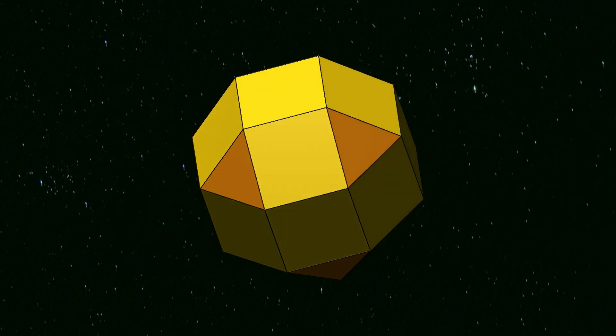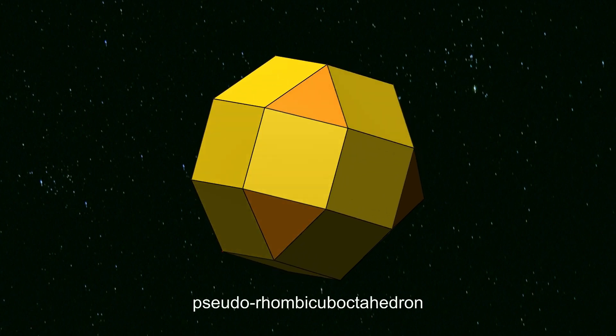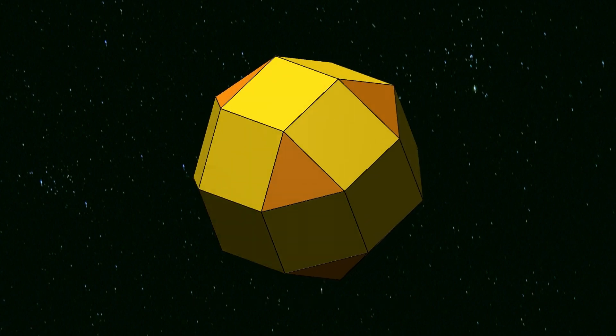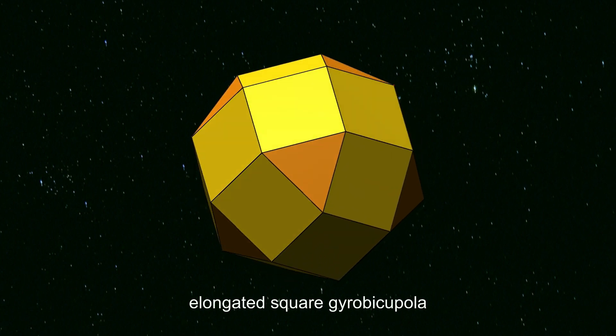This polyhedron is sometimes called the pseudorhombocube octahedron, but its more correct name is the elongated square gyrobicupola.